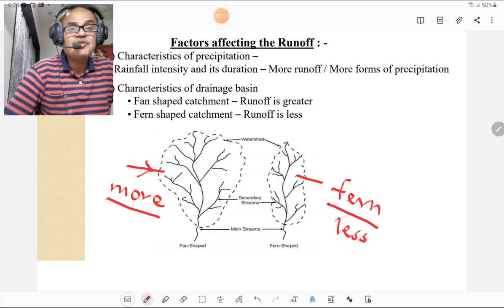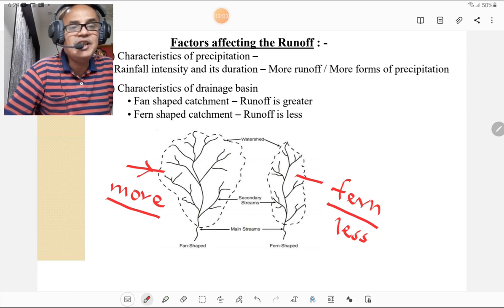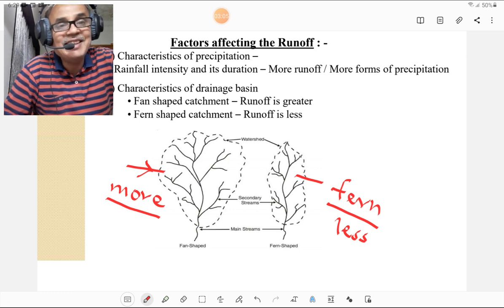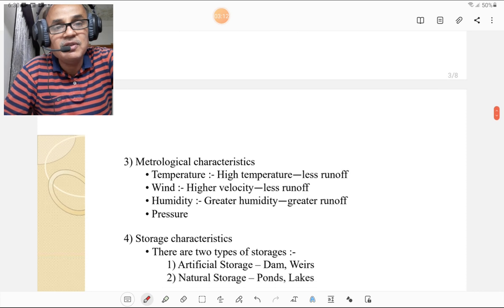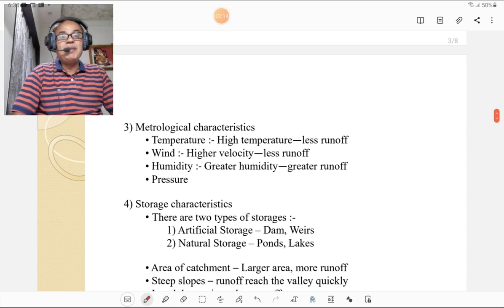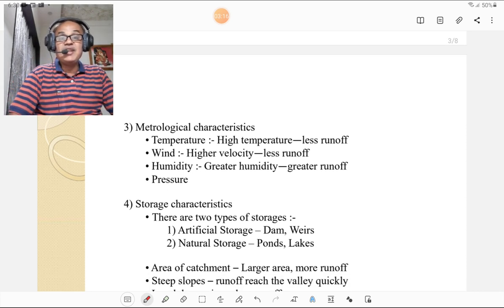You must see these two figures thoroughly and decide which type of catchment has more runoff and which type has less runoff. Third is the meteorological characteristics affecting the runoff. If temperature is high, less runoff. If wind of higher velocity is there, then there is less runoff. When humidity is greater, greater will be the runoff like Mumbai. And also the pressure is affecting the runoff.